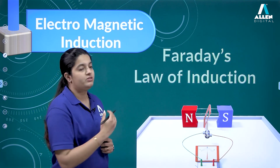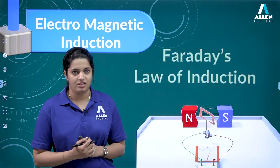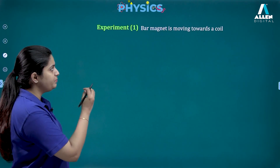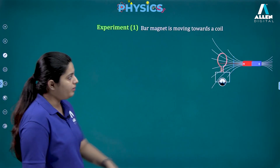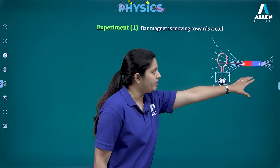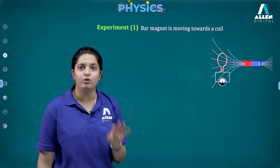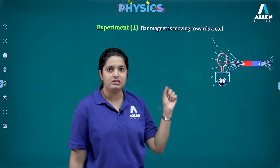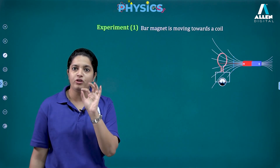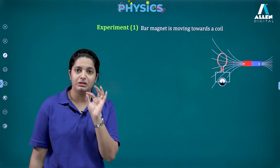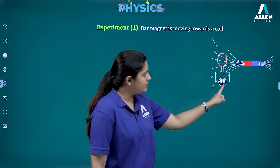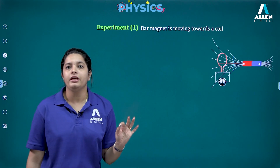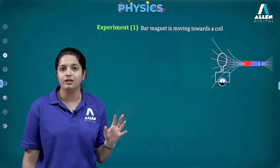He performed certain experiments which led to this discovery. The first one was that he took a simple coil and a bar magnet. A bar magnet has two poles — north pole and south pole. He took a coil formed of conducting wire or conducting material, and connected a small galvanometer to it.